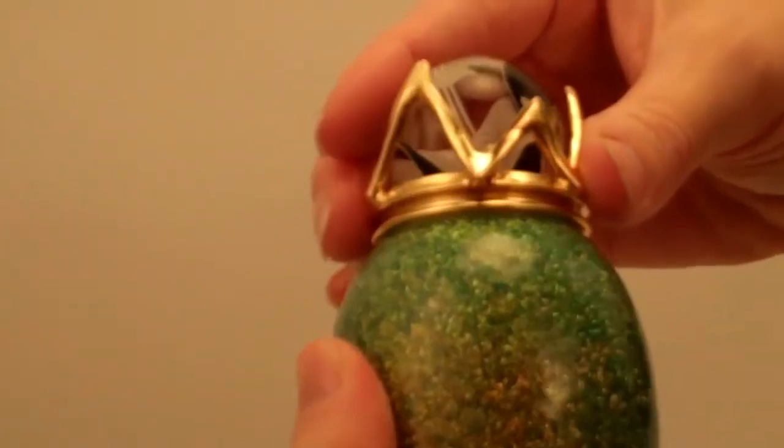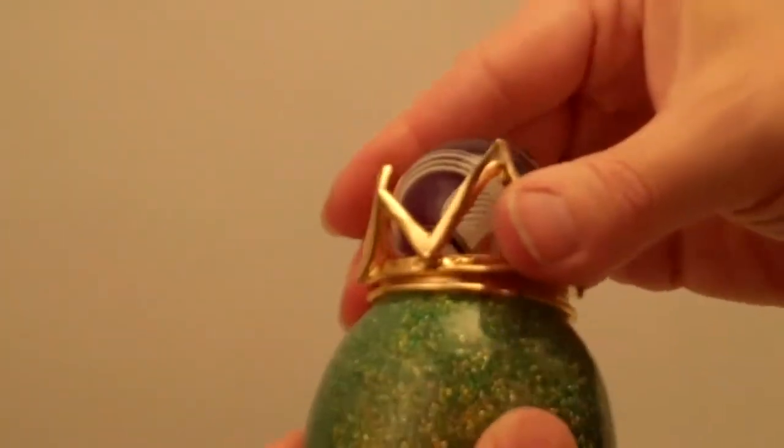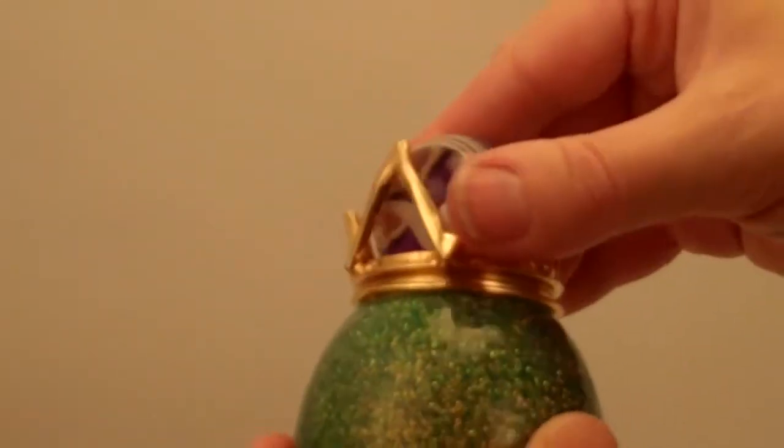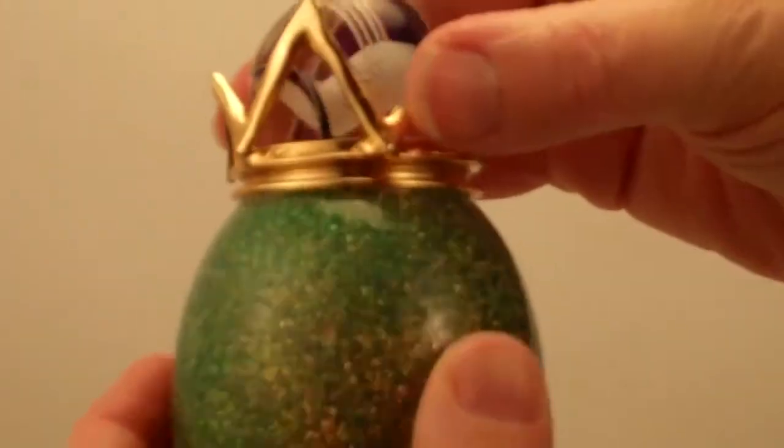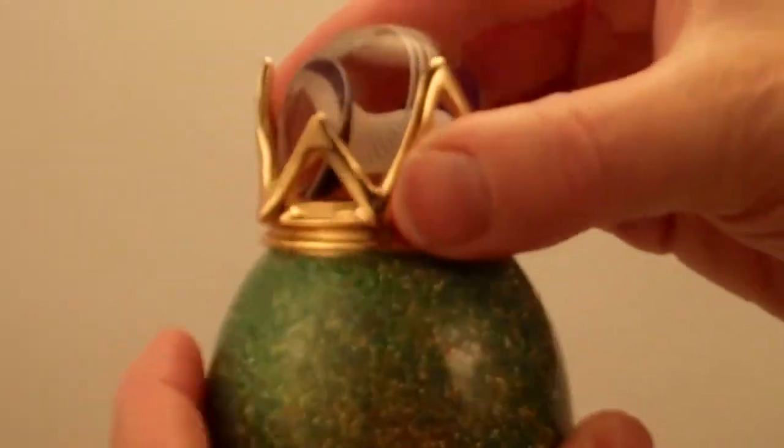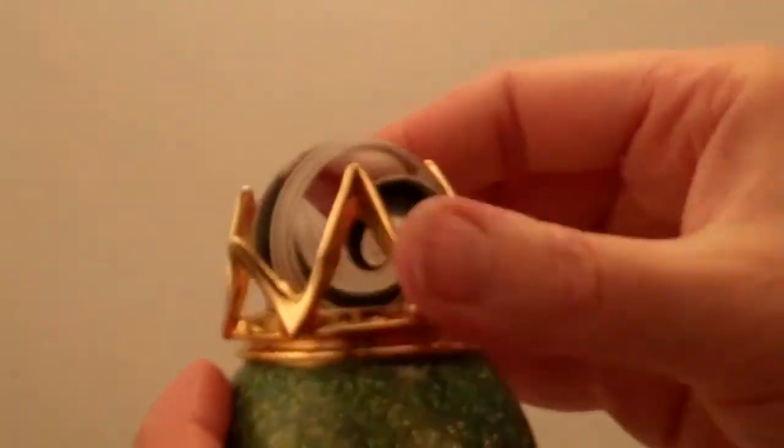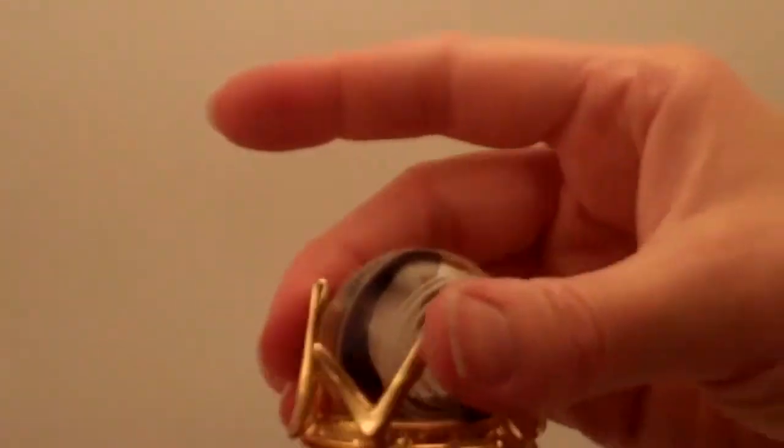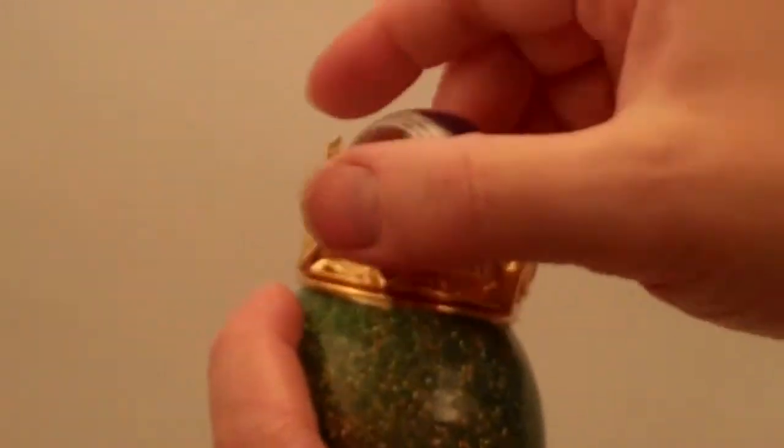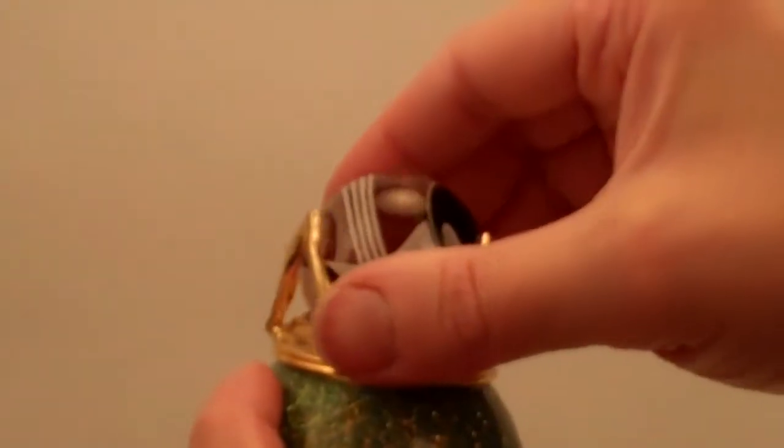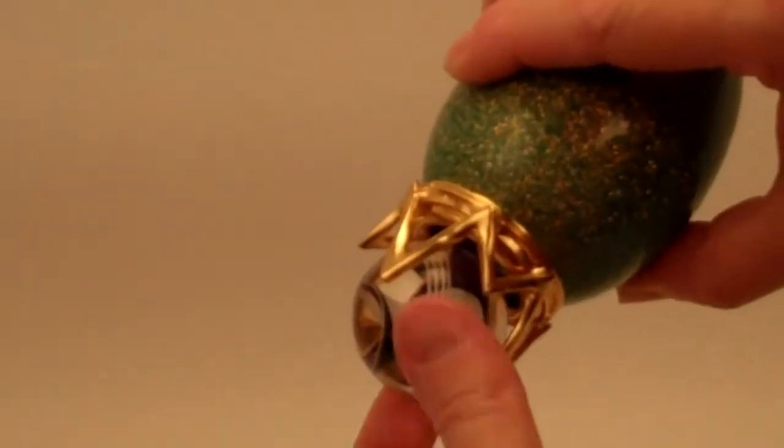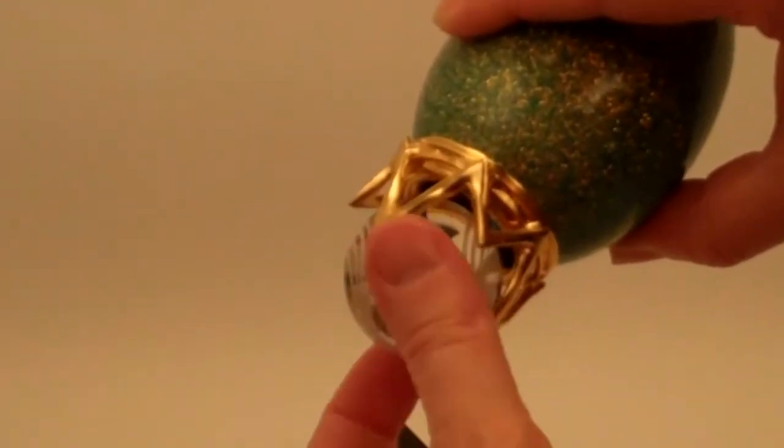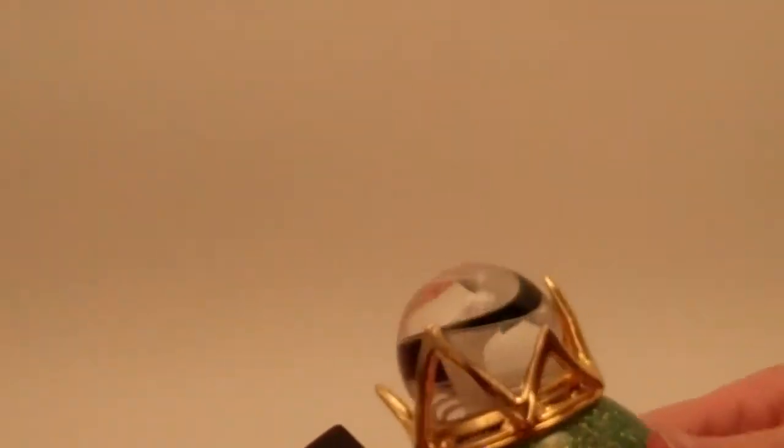And you just want to make certain that you have the crown on straight. I'm looking at it from an angle so it's not quite straight up for me. There we are. And you secure the crown, and again it's the upper points that hold the marble in place. So you can spin the marble within the cage of the crown and enjoy the colors.